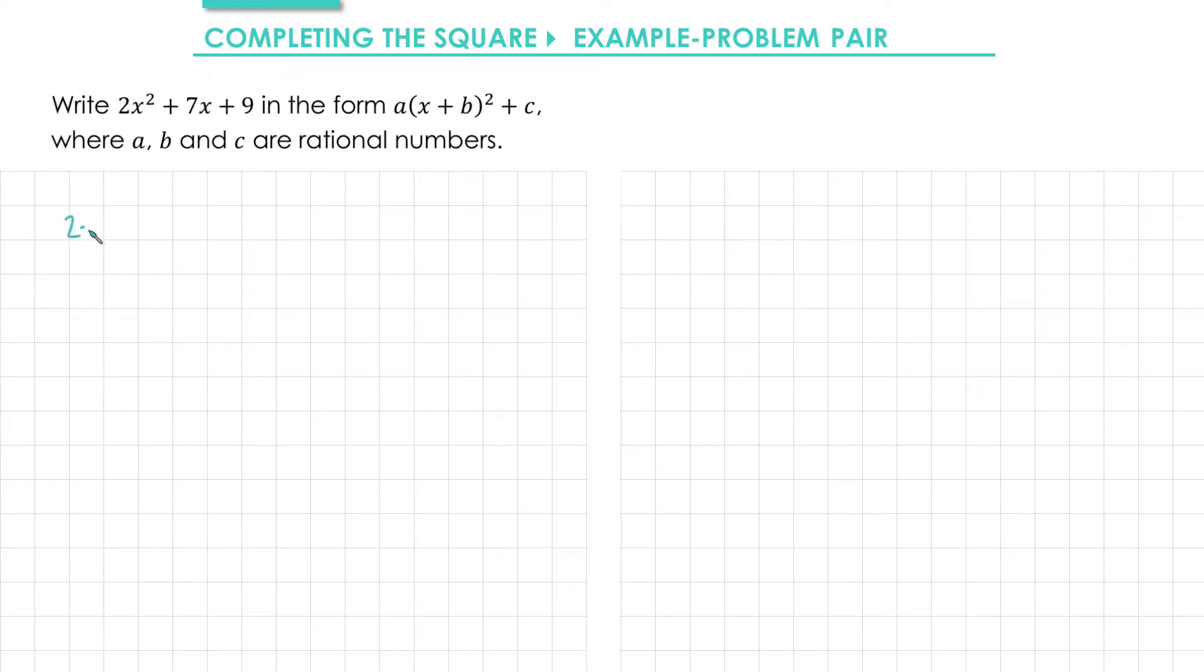We'll start with our 2x squared plus 7x plus 9. First of all I just want to deal with the first two terms of 2x squared plus 7x. I'm going to factorize the 2 outside of some brackets. I'm going to use more than one set of brackets in this question so I'm going to use square brackets.